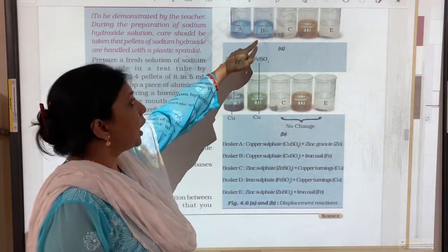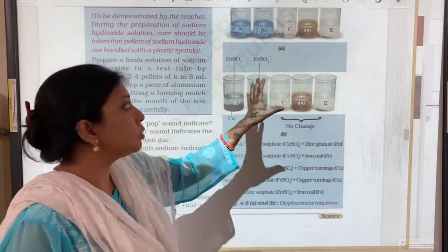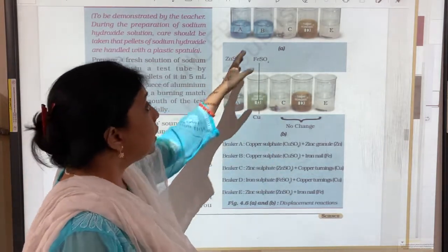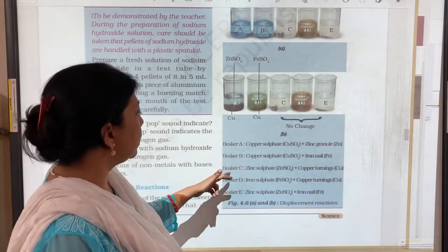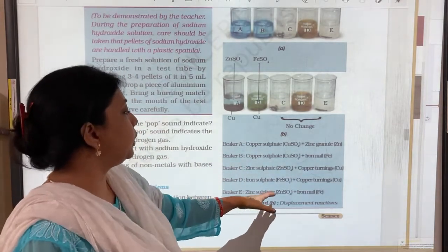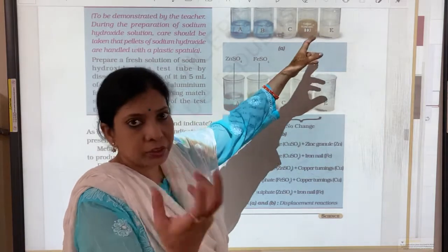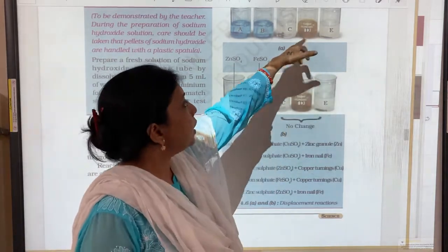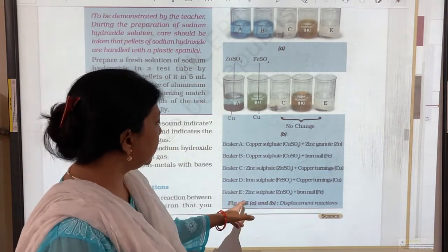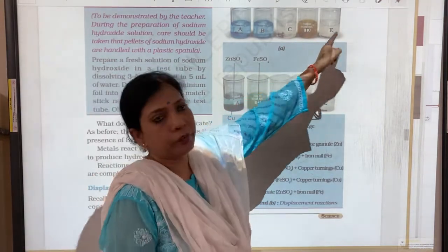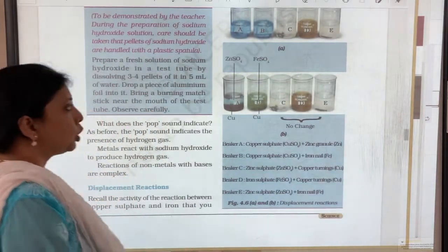In beaker B we had again blue colour solution copper sulphate. In beaker C zinc sulphate, it is transparent whitish colour. Then iron sulphate we had that rusty look, that light brownish colour solution. And beaker E again it was zinc sulphate. We got that transparent whitish solution.